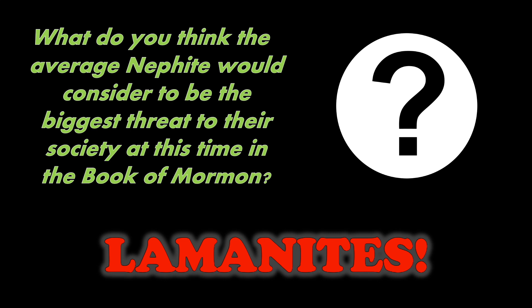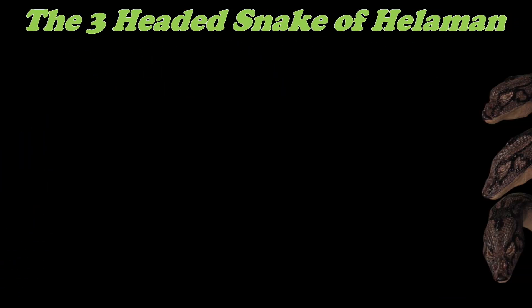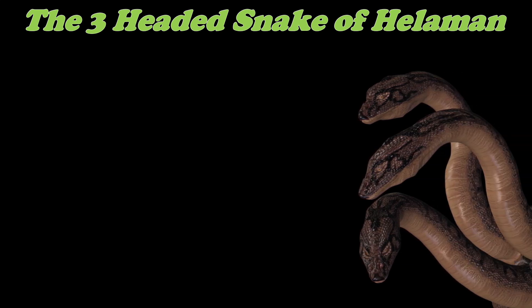There are other problems — much more subtle and hard to detect — that are really going to cause the Nephites the most heartache and loss in this book. I call these 'snake problems.' They're the kinds of things that sneak up on you, that are harder to detect, and poison slowly by degrees. The biggest issues in our lives aren't always going to be the big, obvious, and most intimidating threats. In the book of Helaman, I see three of them. Let's call this the three-headed snake of Helaman — these three things that are basically going to destroy Nephite society.